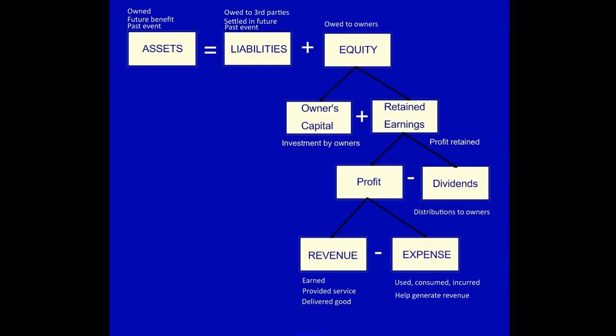'Distribution to owners' — when we pay a dividend, we are distributing profits to the owners. Let's look at this one more time. We have our assets: assets must be owned, have future economic benefit, and they are due to a past event.